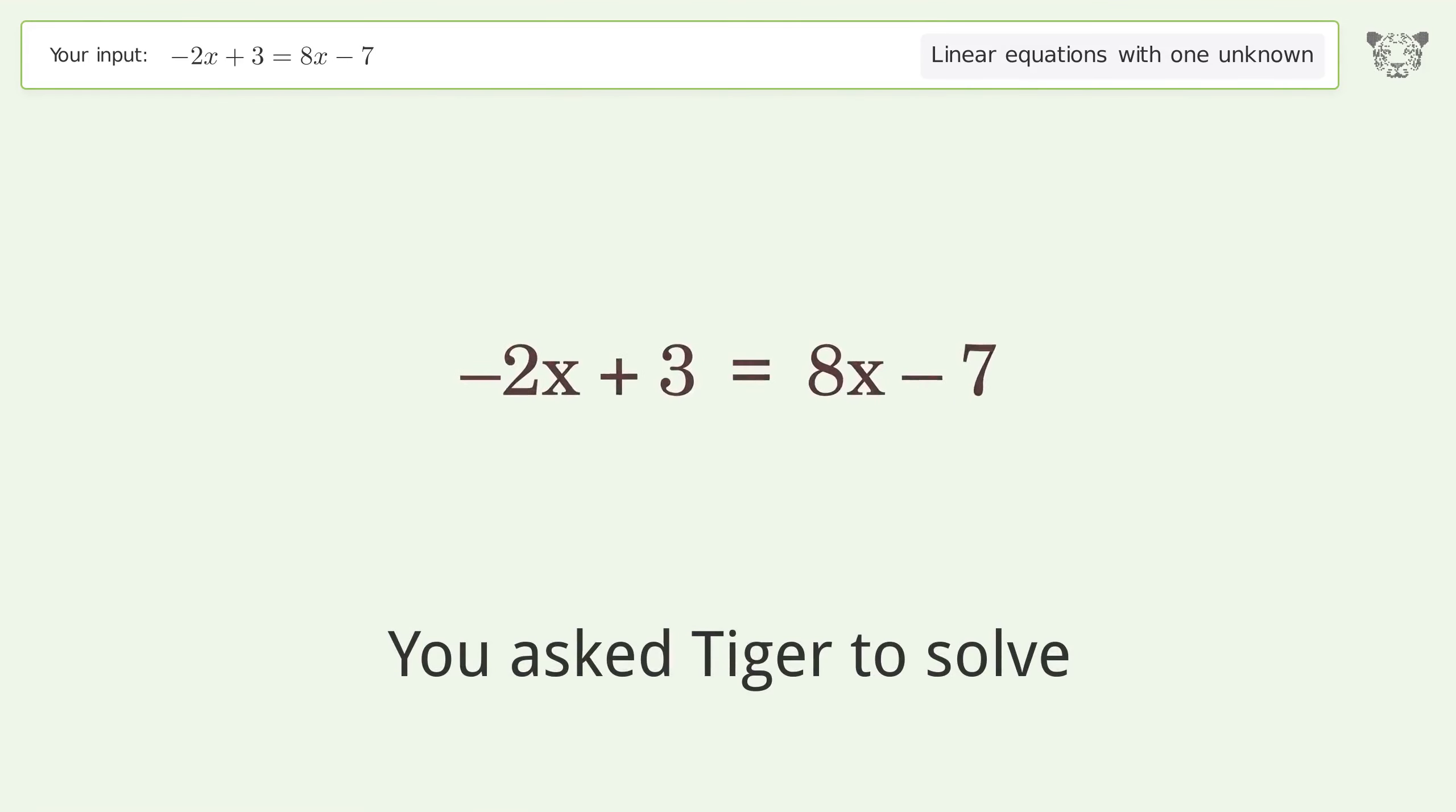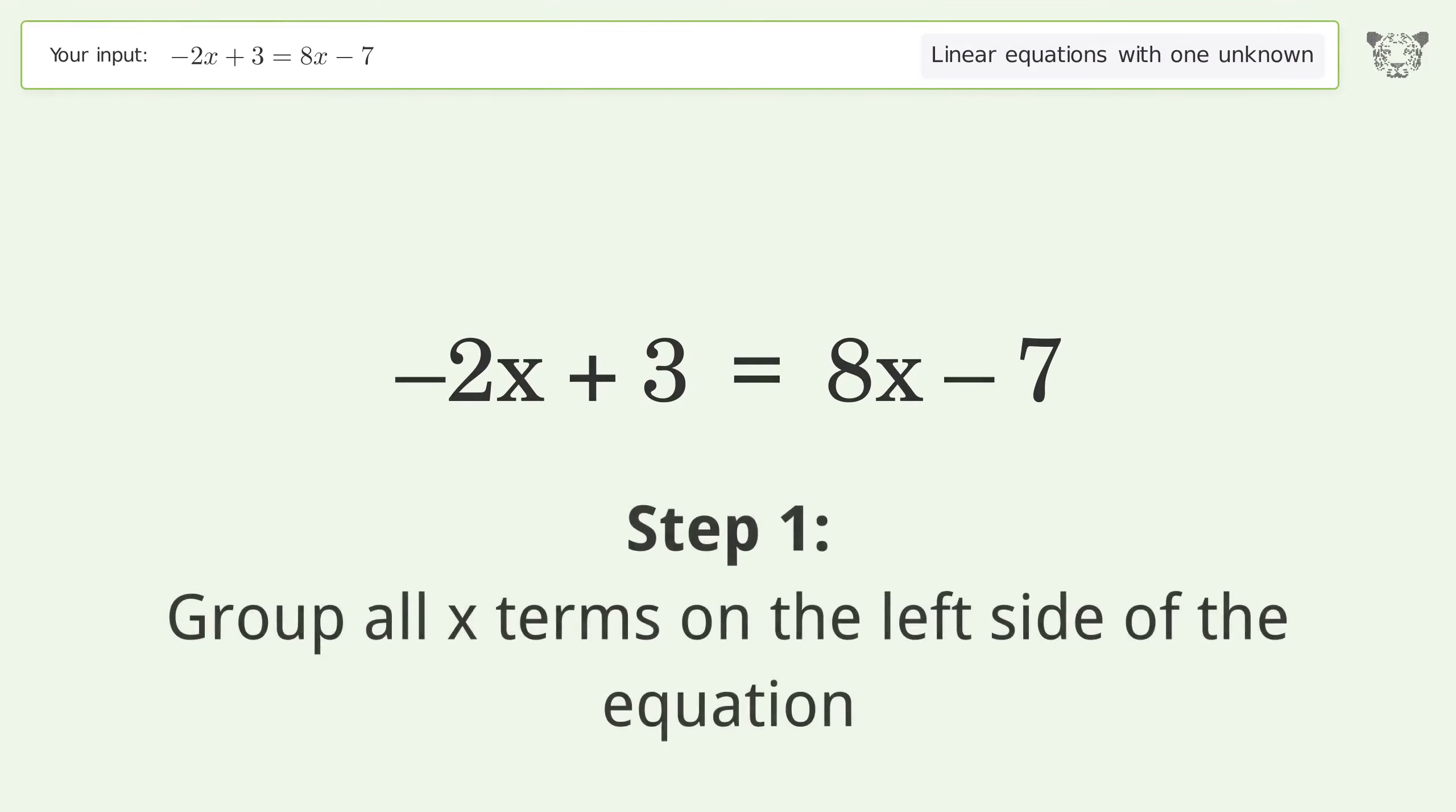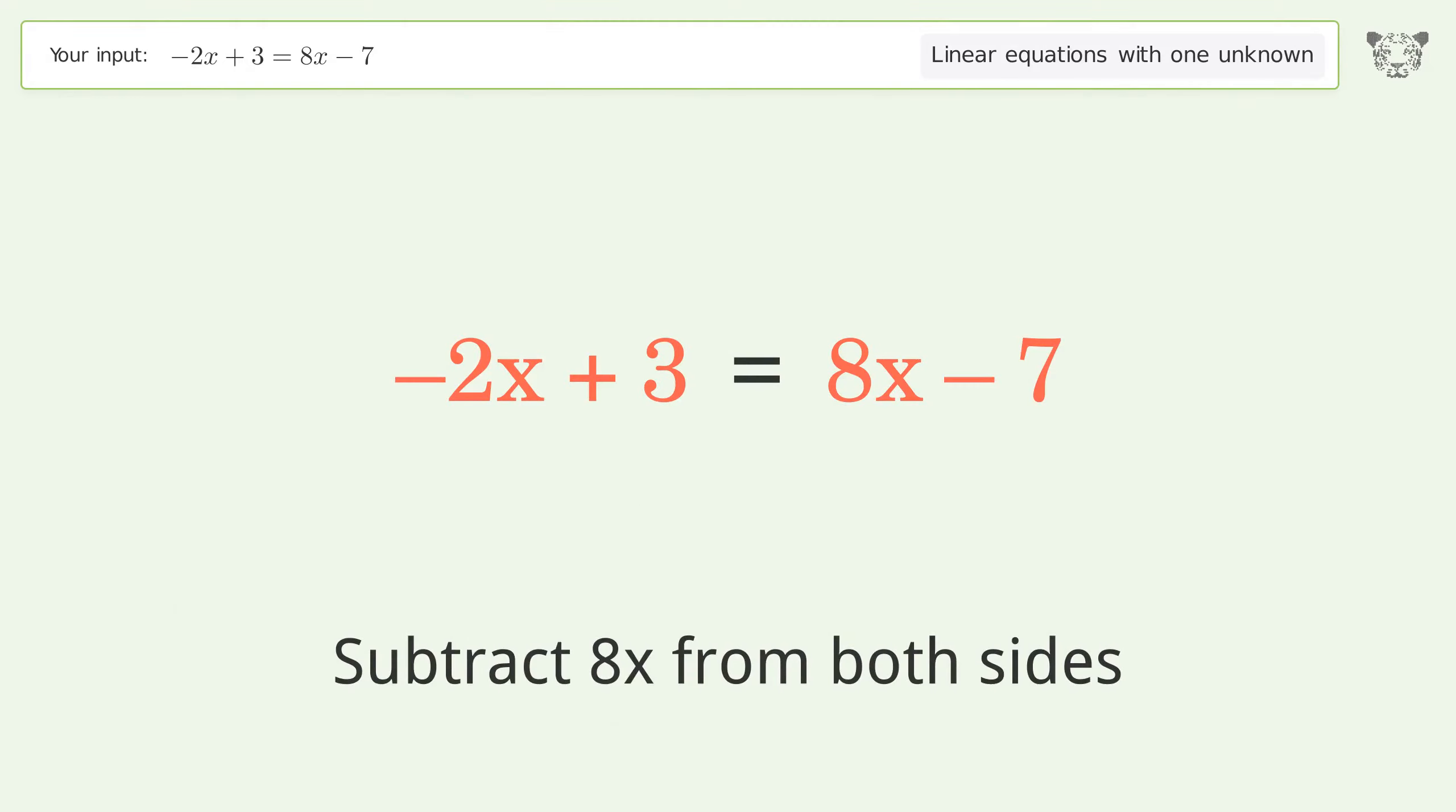You asked Tiger to solve this linear equation with one unknown. The final result is x equals 1. Let's solve it step by step. Group all x terms on the left side of the equation. Subtract 8x from both sides.